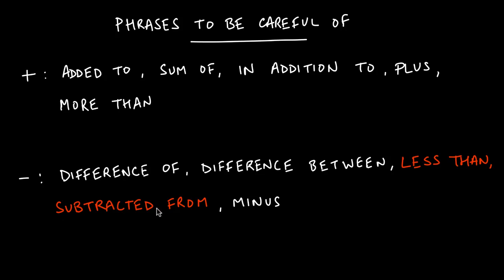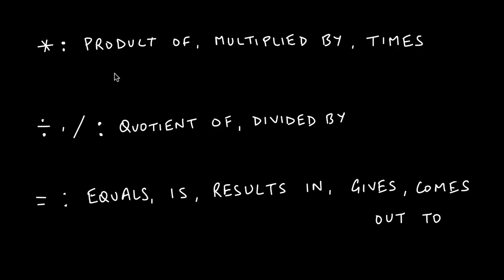These are the two biggest traps for students. Whenever you see these phrases, you're looking for subtraction or a minus. Whenever you see 'product of,' 'multiplied by,' or 'times,' you're looking for multiplication. Whenever you see 'quotient of,' 'divided by,' or 'over,' think division or fractions. Whenever you see 'equals,' or just 'is'—like 'two times a number is seven'—or 'results in,' 'comes out to,' 'gives'—all these mean you should write an equal sign.